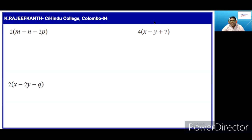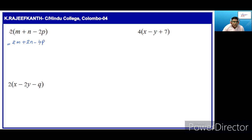There are three more examples. So, we have to multiply each term of this expression by 2. We will multiply m by 2, then m into 2 is 2m. Plus, 2 into n is 2n. Minus, 2 into 2p is 4p.